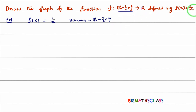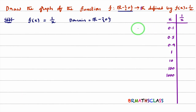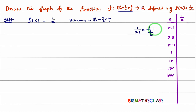To draw the graph of f(x) = 1/x, I will take some x values and calculate the corresponding f(x) values. When x = 0.1, what is 1/0.1? 0.1 is nothing but 1/10, so 1 divided by 1/10 is 10. So when x = 0.1, the value of 1/x is 10.